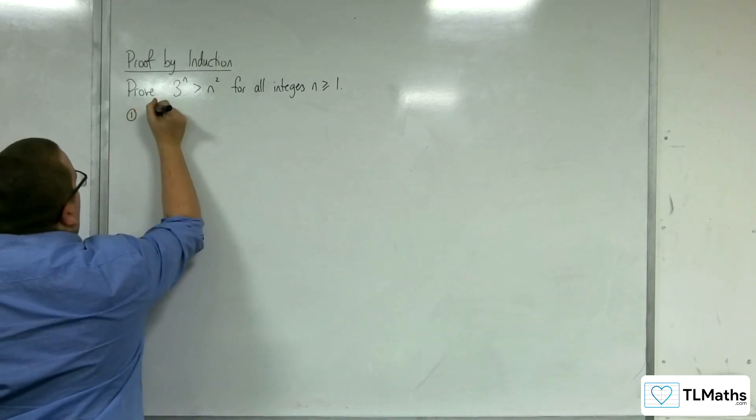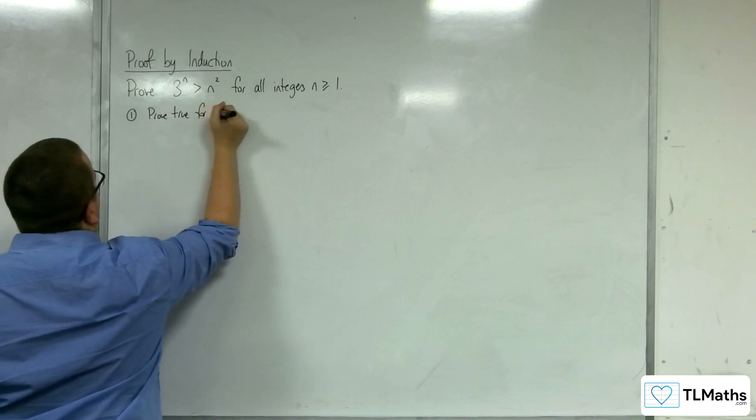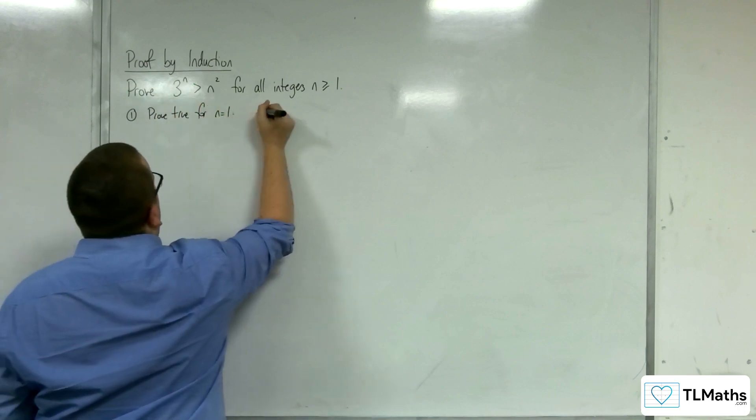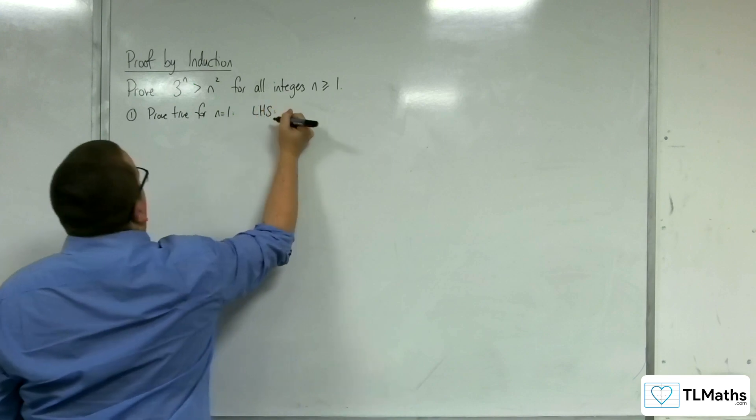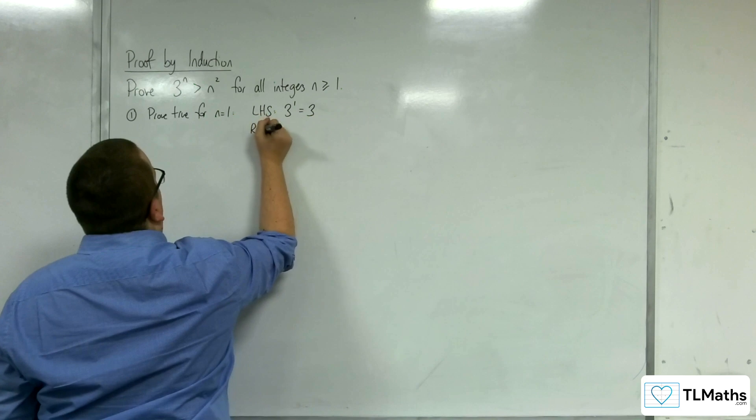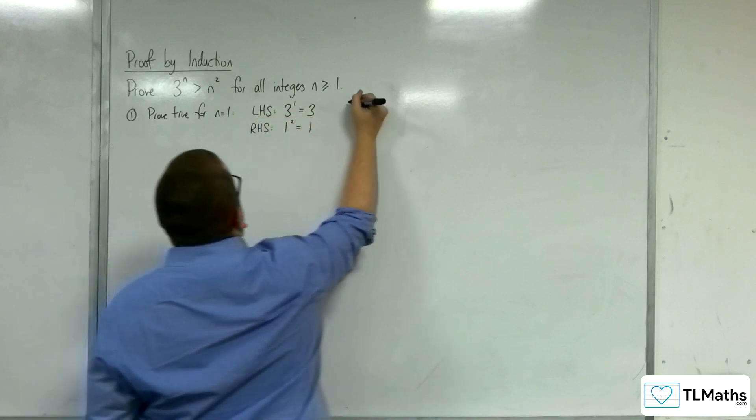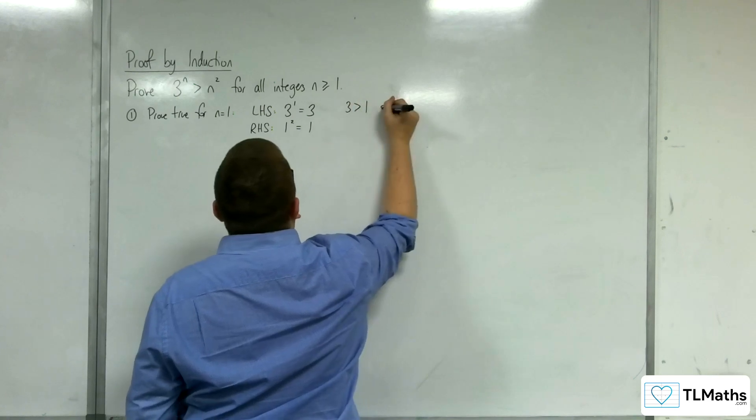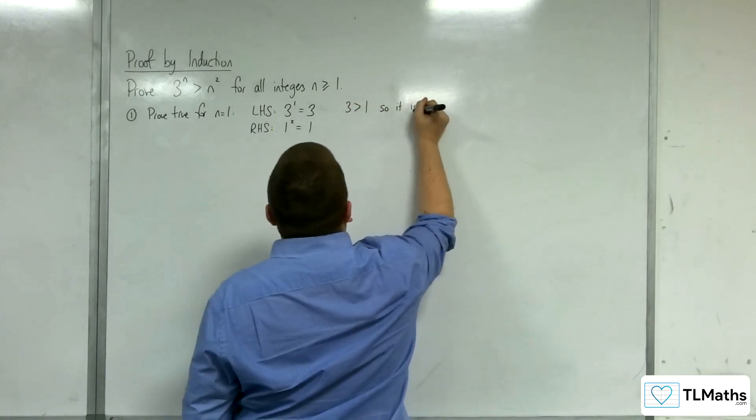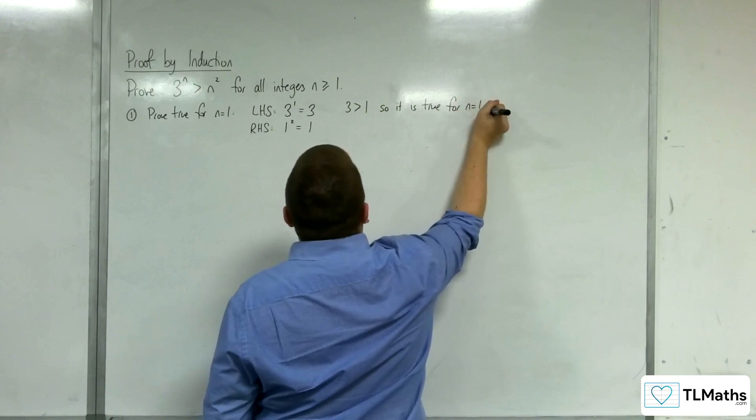Step 1: Prove true for n equals 1. On the left hand side we've got 3 to the power of 1, which is 3. And on the right hand side we've got 1 squared, which is 1. 3 is clearly greater than 1, so it is true for n equals 1.